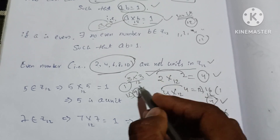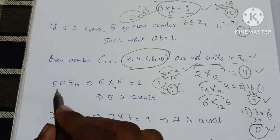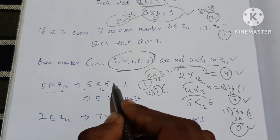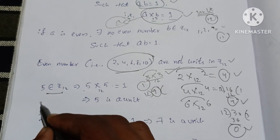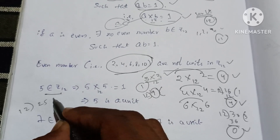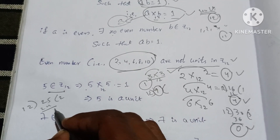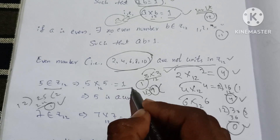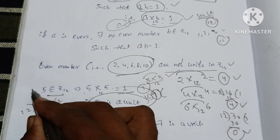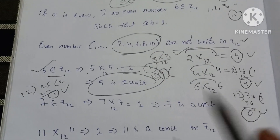Next, check 5. 5 belongs to Z₁₂. 5 into 5 is 25. Multiplication modulo 12: 25 mod 12 = 1, since 12×2 = 24 and the remainder is 1. So 5 is a unit.